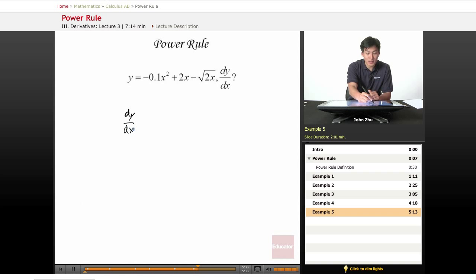dy/dx equals negative 0.1 times n, which is 2, times x to the n minus 1, which is 1.